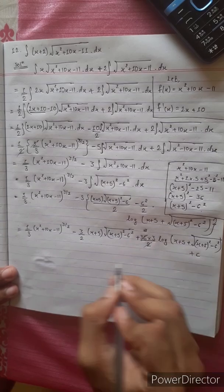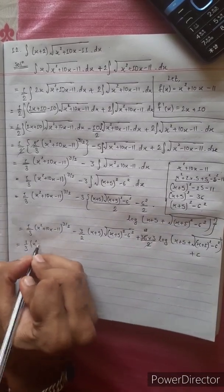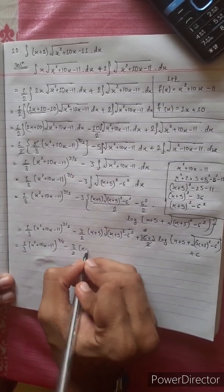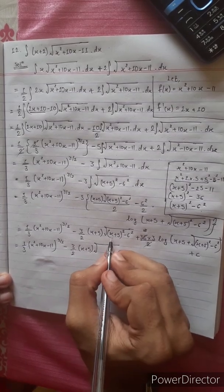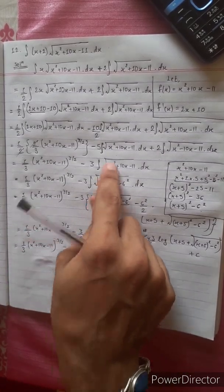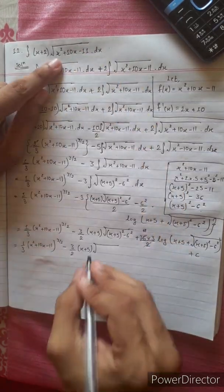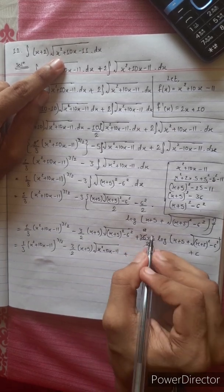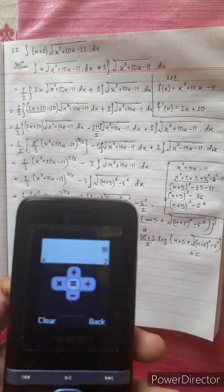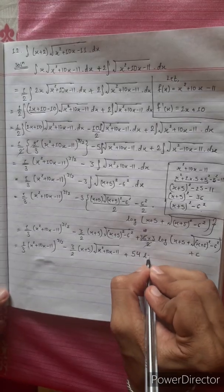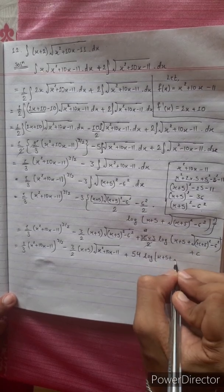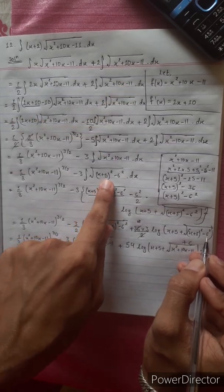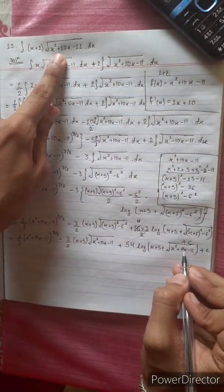So the final expression is: one-third times (x squared plus 10x minus 11) to the power 3 by 2, minus 3 by 2 times (x plus 5) times √((x plus 5) squared minus 36), divided by 2, plus the log term times x squared plus 10x minus 11.